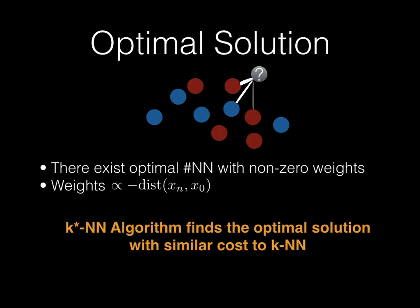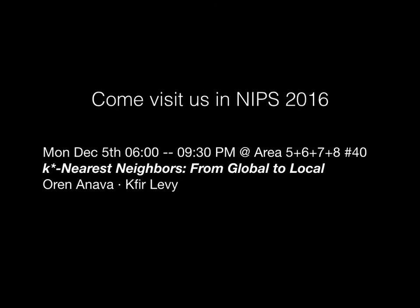Finally, we devise an algorithm, called k*-NN, that finds the optimal solution with the same computational cost as the k-nearest neighbors rule. If you would like to hear more, please come and visit us at NeurIPS.